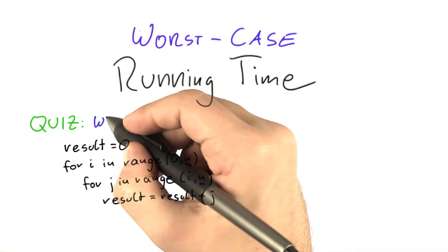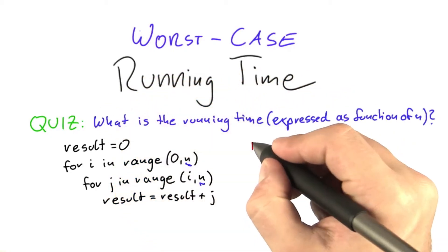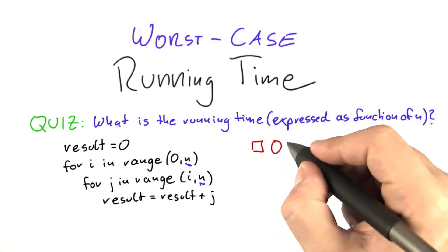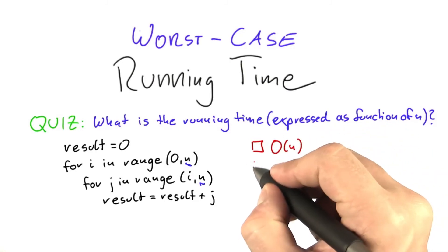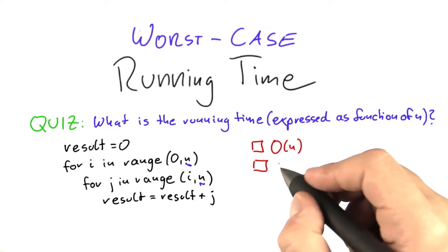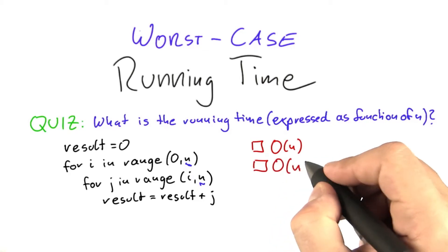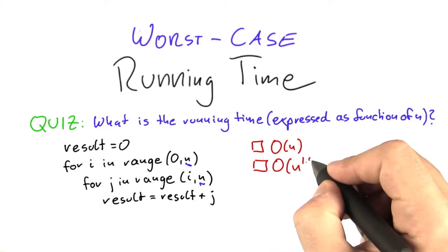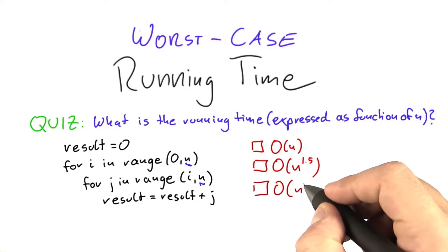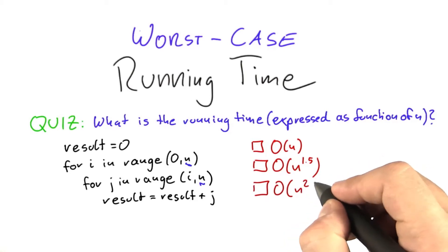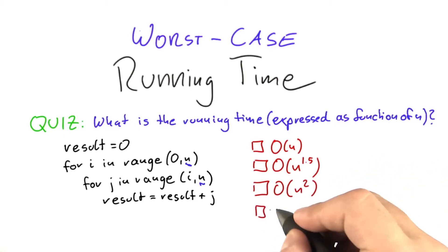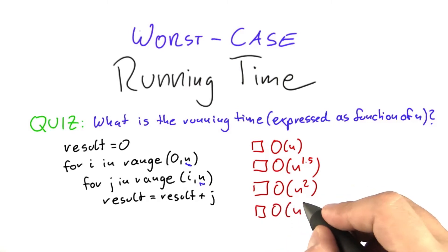I'm going to give you a number of choices for your answer. The first choice is O(n), so it would be a linear algorithm. The second one is O(n²). The next one is O(n log n). And the final one is O(n³).